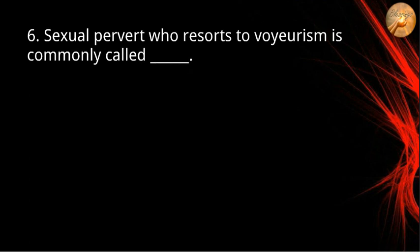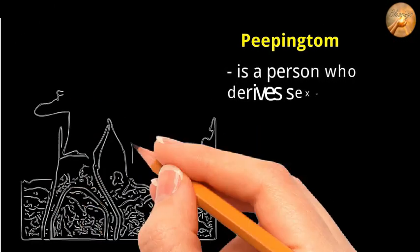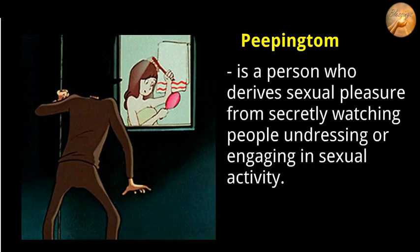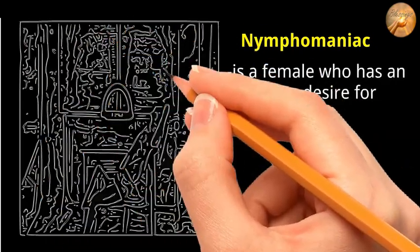Number six: a pervert who resorts to voyeurism is commonly called A) nymphomaniac, B) peeping tom, C) exhibitionist, D) sadist. The correct answer is letter B, peeping tom. A peeping tom is a person who derives sexual pleasure from secretly watching people undressing or engaging in sexual activity. A nymphomaniac is a female, though occasionally a male, who has an excessive desire for sexual activity especially with different partners.